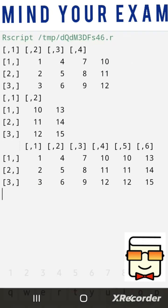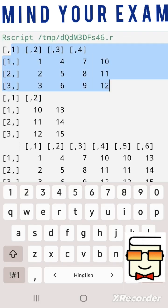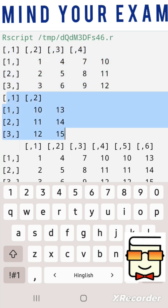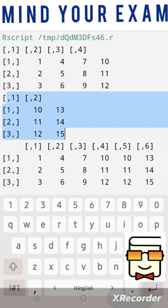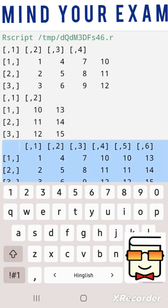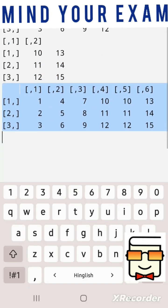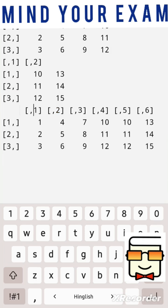Looking at the output, matrix A has four columns and three rows. Matrix B has three rows and two columns. When we combine both matrices using cbind, we get a new matrix D that has three rows and six columns — the first four columns from A and the last two columns from B.